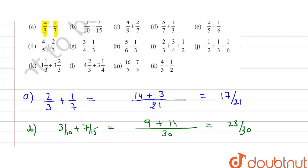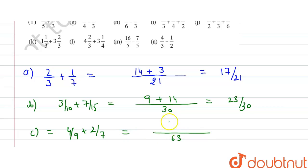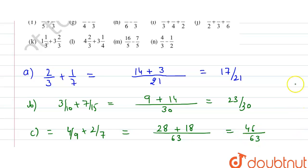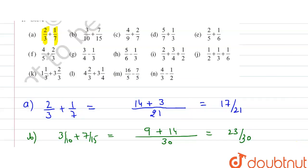The third part is 4/9 + 2/7. The LCM of 9 and 7 is 63. So 7 × 4 = 28, and 9 × 2 = 18. Adding gives 46/63.